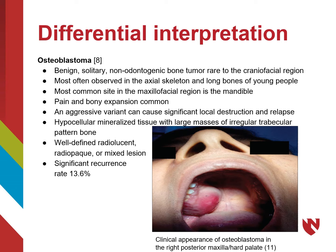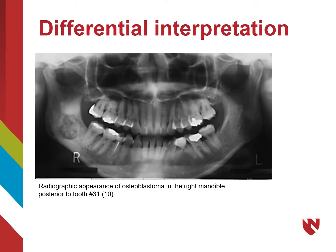Osteoblastoma is a benign, solitary, non-odontogenic bone tumor that is not commonly found in the craniofacial region. It is most commonly found in the axial skeleton and long bones of young individuals. If found in the maxillofacial region, it is most often found in the mandible. Though benign, it is commonly associated with pain and expansion, with an aggressive variant that can cause a large amount of local destruction. Osteoblastoma is a mass of hypocellular mineralized area with irregular trabecular patterns. It is very well defined, unlike fibrous dysplasia, which is diffuse and lacks defined borders. This lesion has a notable recurrence rate, and even more so for more aggressive osteoblastoma types. Here is a radiograph of osteoblastoma of the right posterior mandible — a well-defined mixed opacity lesion, just distal to the roots of tooth number 31.